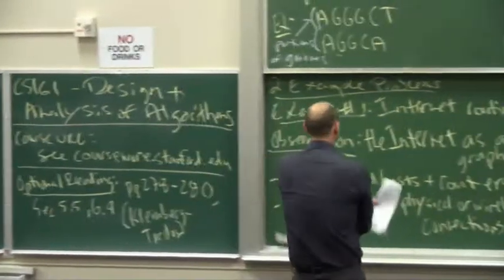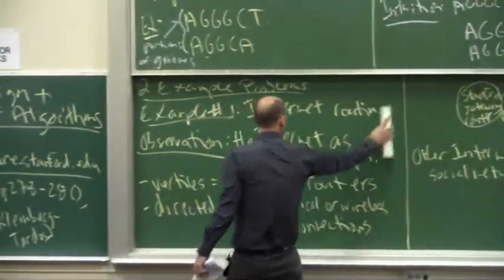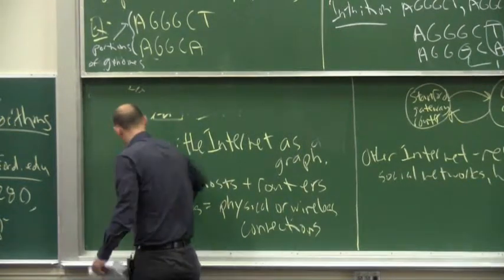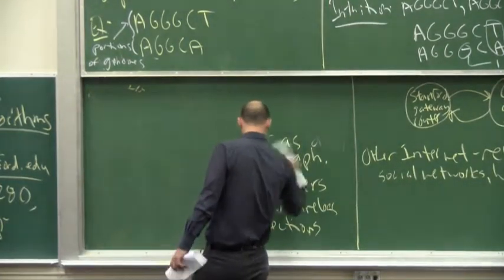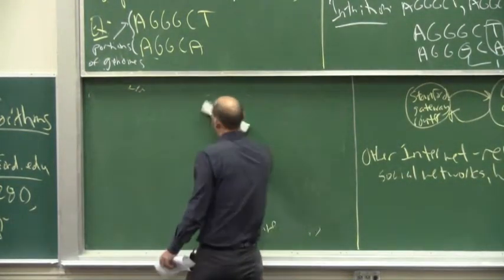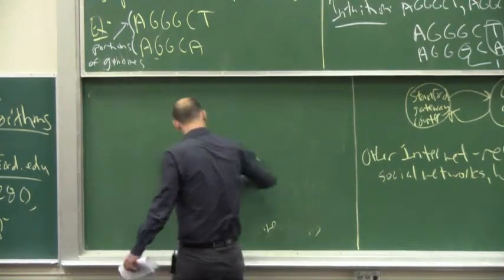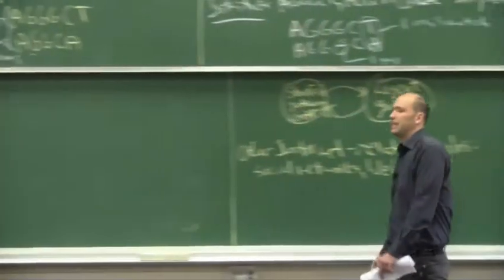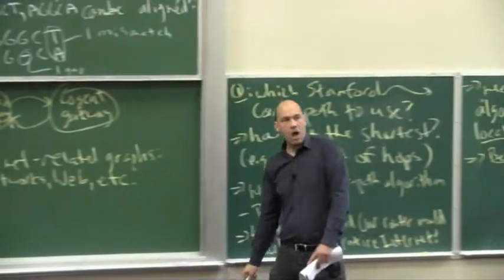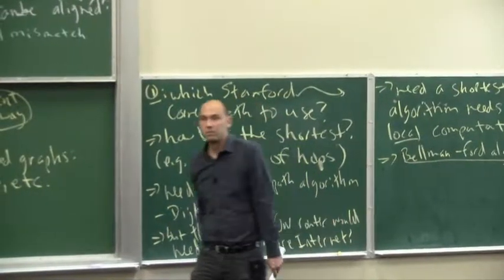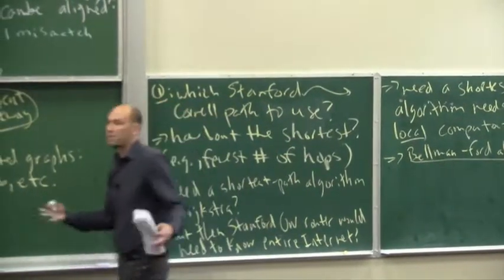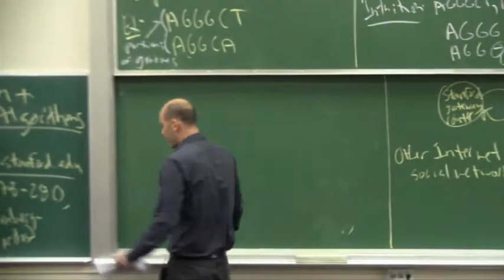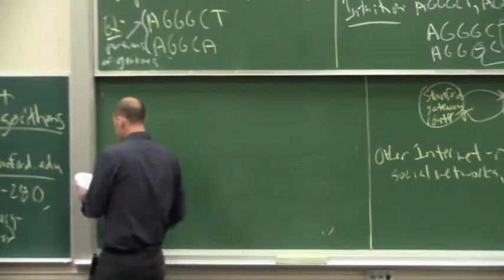Here's how we get around that. Now we're going to be able to finally define the problem completely. In the input of the problem, I will give you not only two strings, but also some numbers which tell you how much penalty you get for the different possible errors you might make — for gaps and for various mismatches.